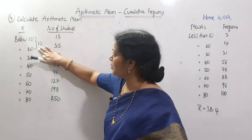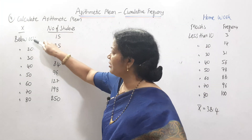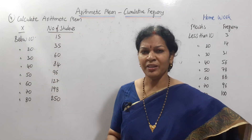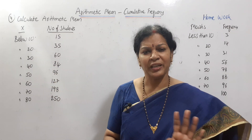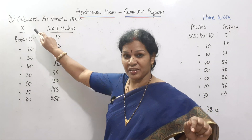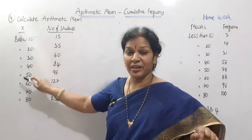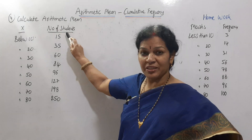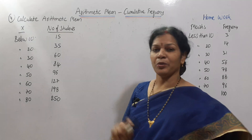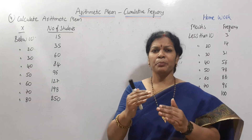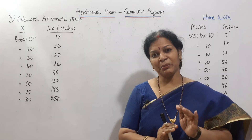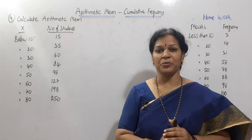Here is x. The x values are: below 10, below 20 ... up to below 80. This means the class intervals are 10 to 20, 20 to 30, and so on. The number of students — observe the frequency — this is always in ascending order. Ascending means the value of x, so we need to rearrange the frequency.